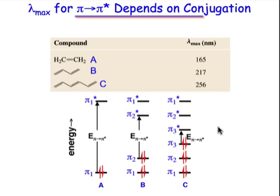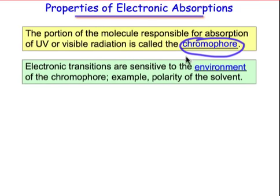Molecules that absorb light are known as chromophores. And the position of an absorbance for a chromophore depends on its environment. For example, one way to affect the environment is by changing the polarity of the solvent. Not all transitions are equally affected by environment,